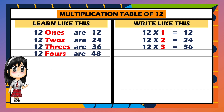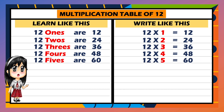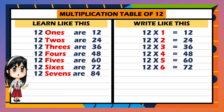12 fours are 48. 12 fives are 60. 12 sixes are 72. 12 sevens are 84.